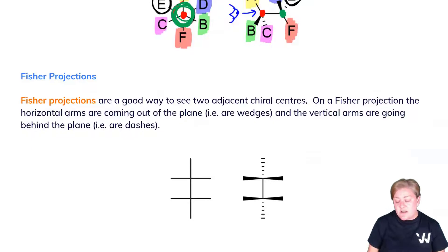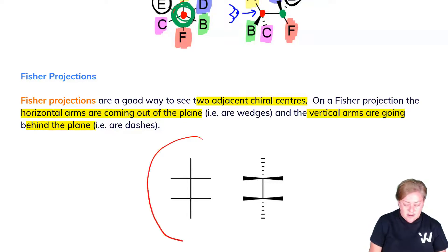A Fischer projection is the last type of three-dimensional architecture you need to be comfortable with. They're a good way to see two adjacent chiral centers. On a Fischer projection, the horizontal arms are coming out of the plane, and the vertical arms are going behind the plane. In organic chemistry, you will see the Fischer projection drawn with straight lines without this information.